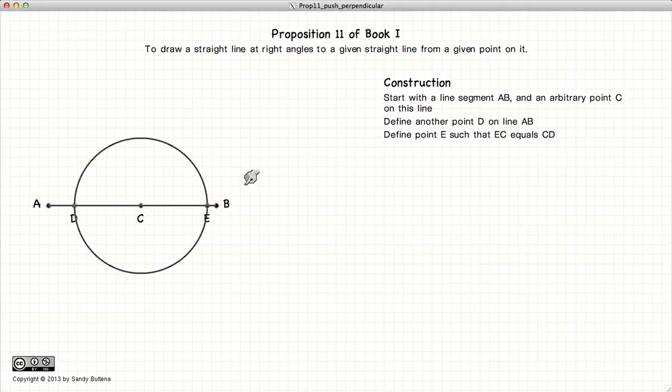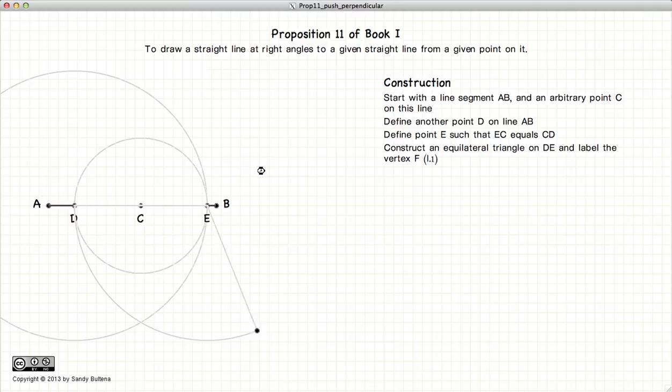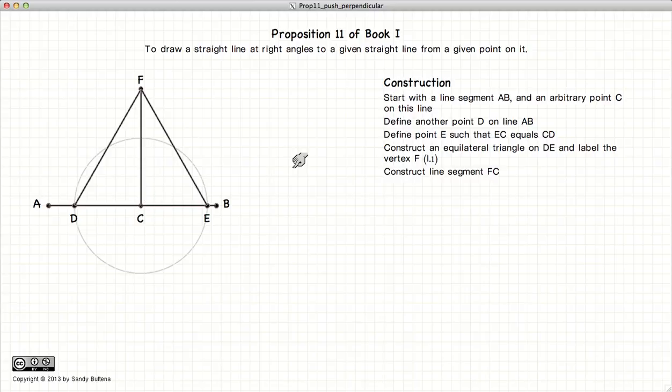The next thing we're going to do is draw an equilateral triangle on our line segment DE and label the vertex F. Drawing a line from F to C, we now have two right angles FCD and FCE.